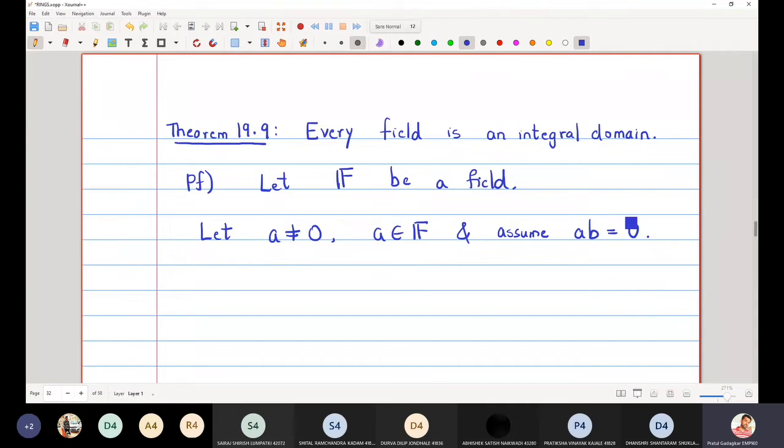Now look at the statement carefully. It is given to us that F is a field and I have to prove that F is an integral domain. That is why I have assumed here that AB is equal to zero. So at the end, I must be able to prove that either A is zero or B is equal to zero.